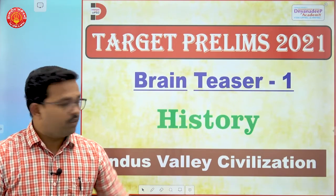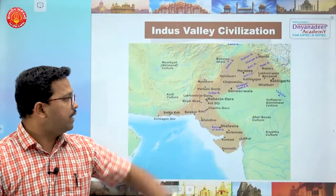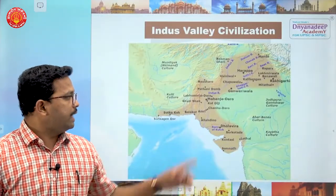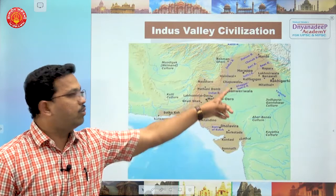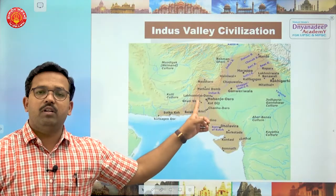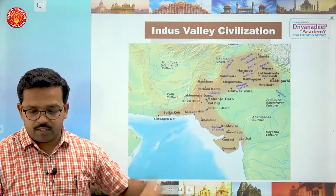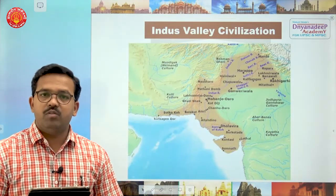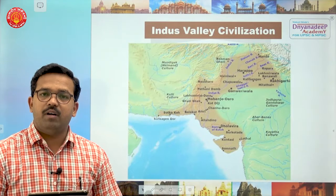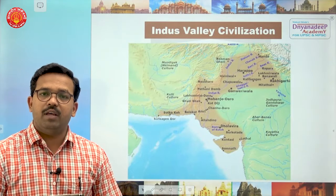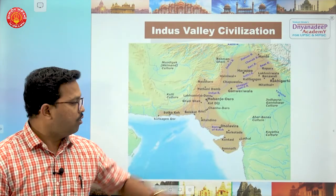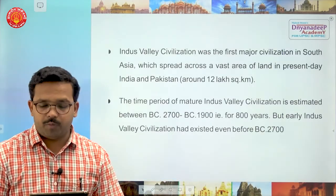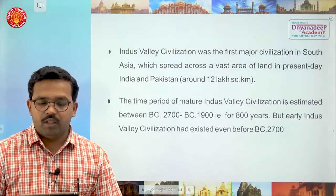Today we are going to study about Indus Valley Civilization. This is the diagram of Indus Valley Civilization, located around the Indus Valley. You will realize it is the Indus Valley which has its tributaries like Jhelum, Chenab, Ravi, Beas and Sutlej. We will go through every point one by one.